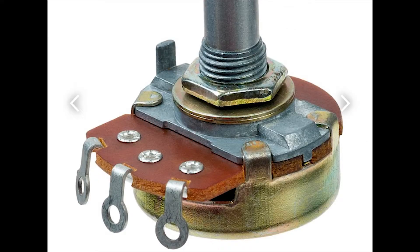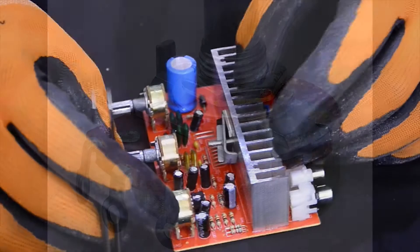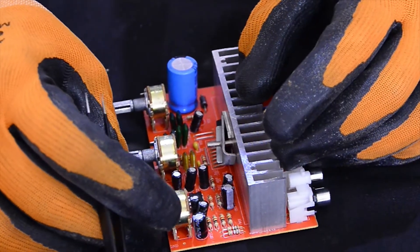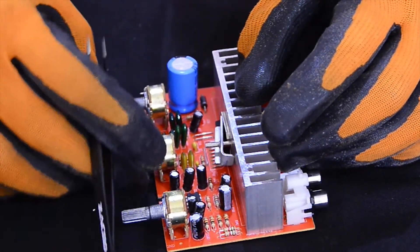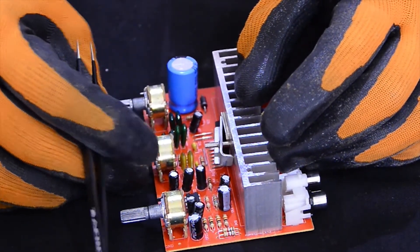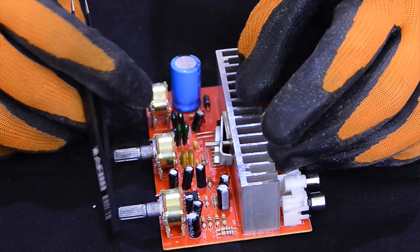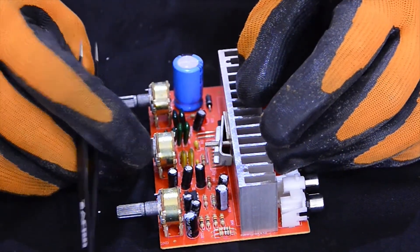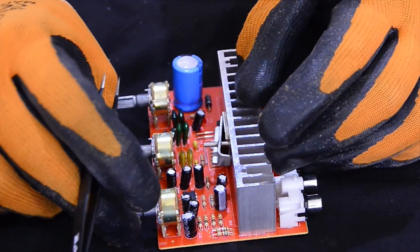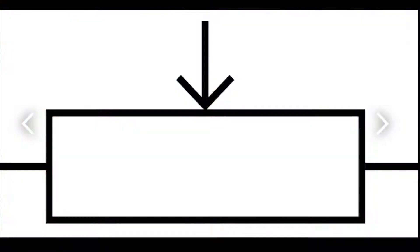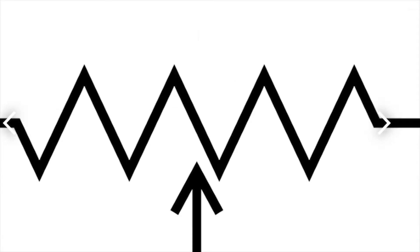Potentiometer. A potentiometer is a three-terminal resistor with a sliding or rotating contact that forms an adjustable voltage divider. If only two terminals are used, one end and the wiper, it acts as a variable resistor or rheostat. That is the electronic symbol of a potentiometer.